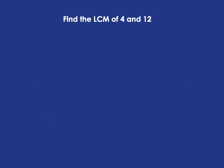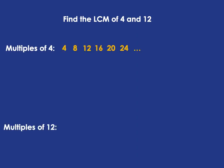Now a quick example: if we needed to find the lowest common multiple of 4 and 12, again just write down some of the multiples of 4. Then you start writing down the multiples of 12, and as soon as something appears that's already in the list of multiples of 4, you stop. You write down 12 as your first multiple of 12, and that's already in the list for multiples of 4. So the lowest common multiple of 4 and 12 is 12.